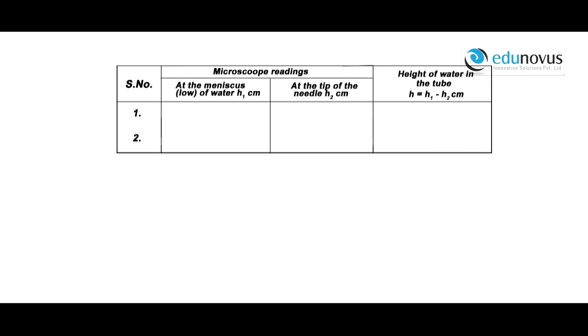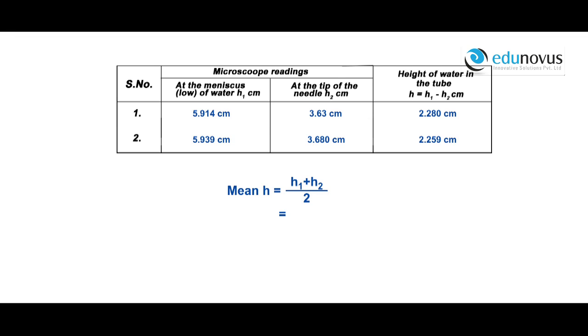The traveling microscope reading focused on the lower meniscus is 5.914 cm. The reading focused on the tip of the needle is 3.630 cm. The difference gives capillary rise h = 2.280 cm. For the second reading, mean h = (h1 + h2) / 2 = (2.280 + 2.259) / 2, therefore mean h = 2.269 centimeters.